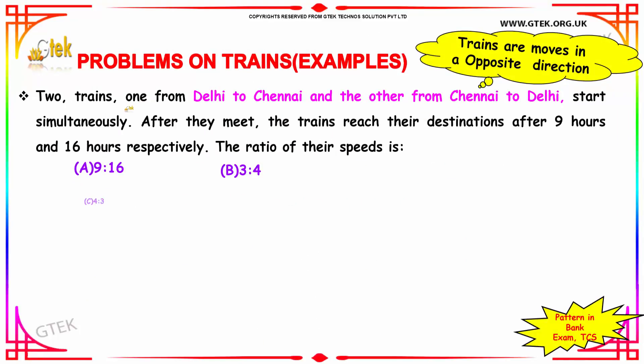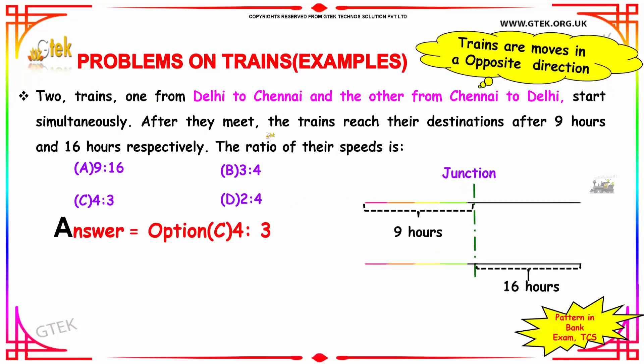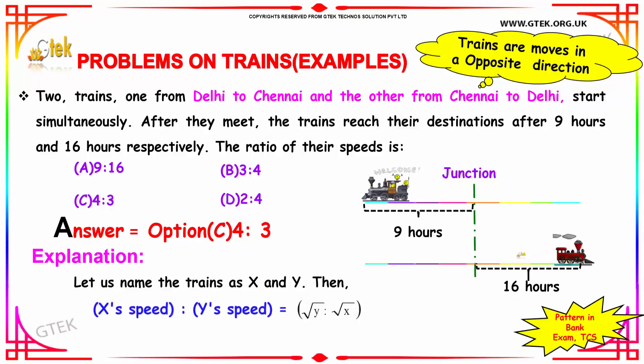Now we got two trains, one from Delhi to Chennai and the other from Chennai to Delhi. They start simultaneously. After they meet, the trains reach their destinations after 9 hours and 16 hours respectively. What is the ratio of their speed? This is the question.